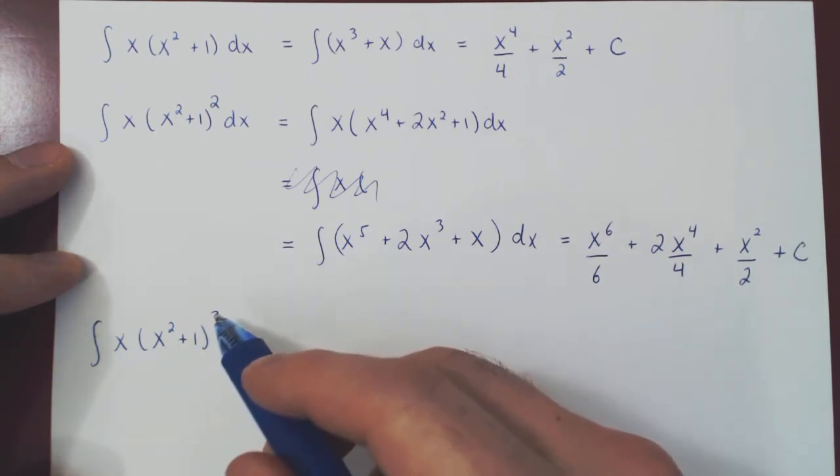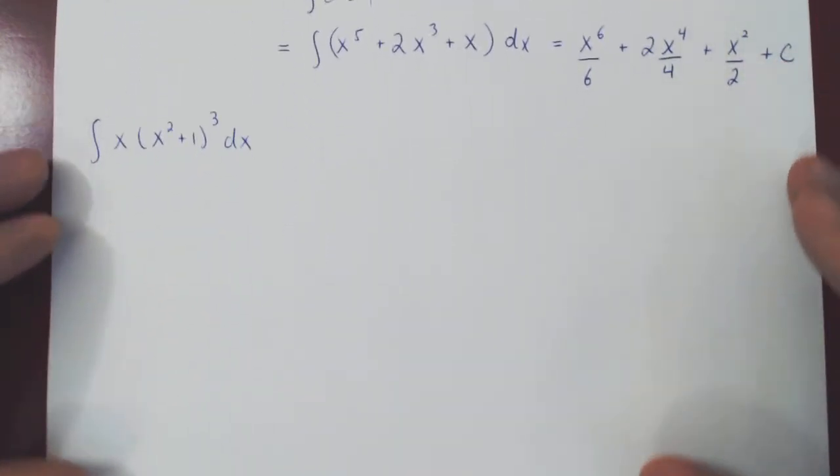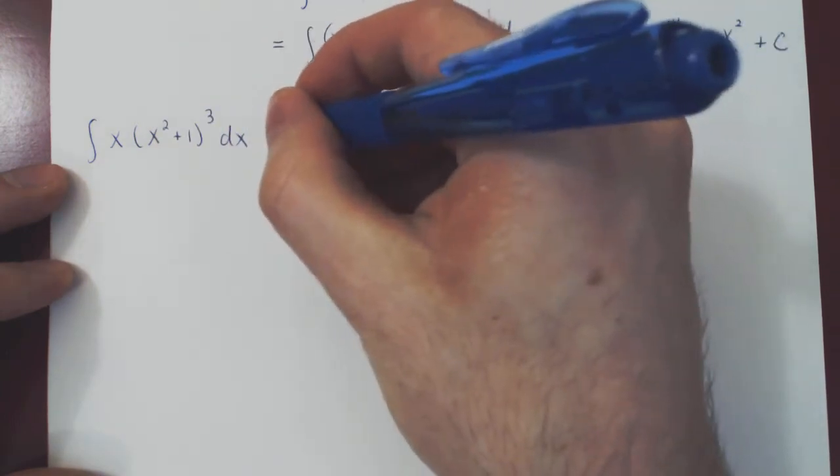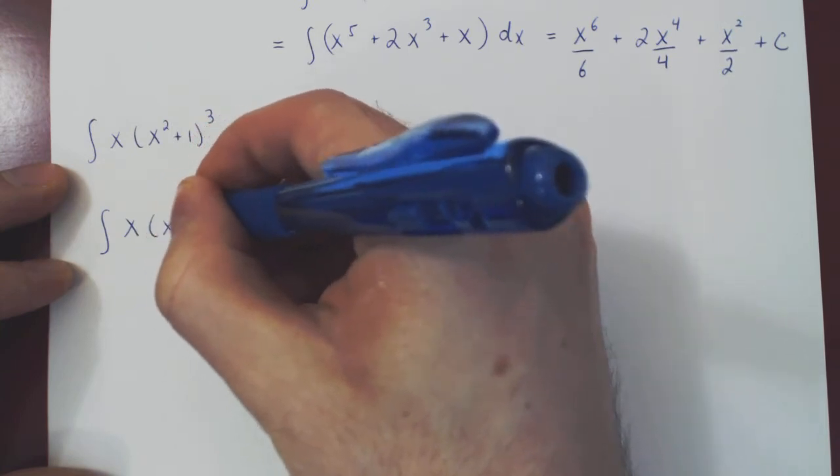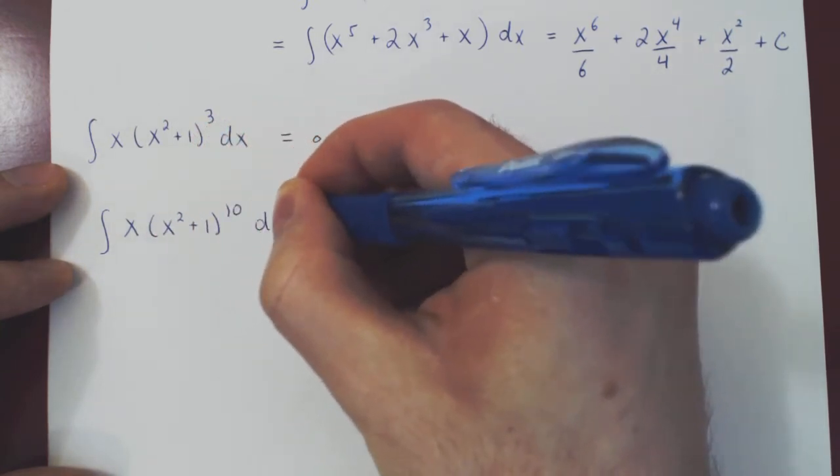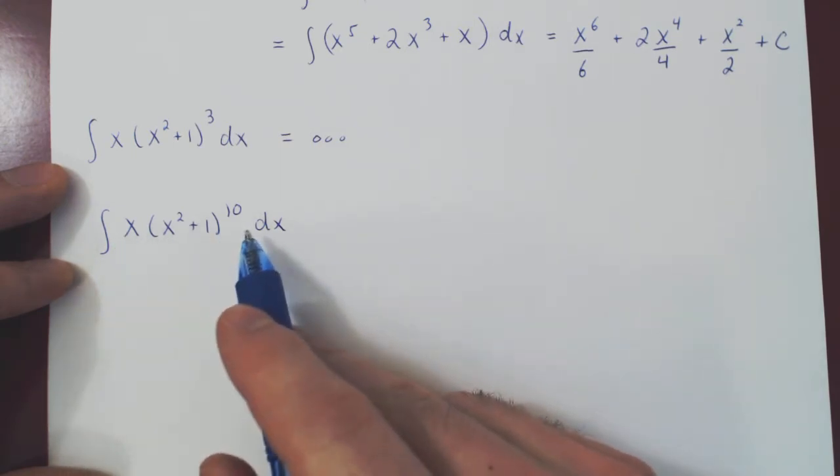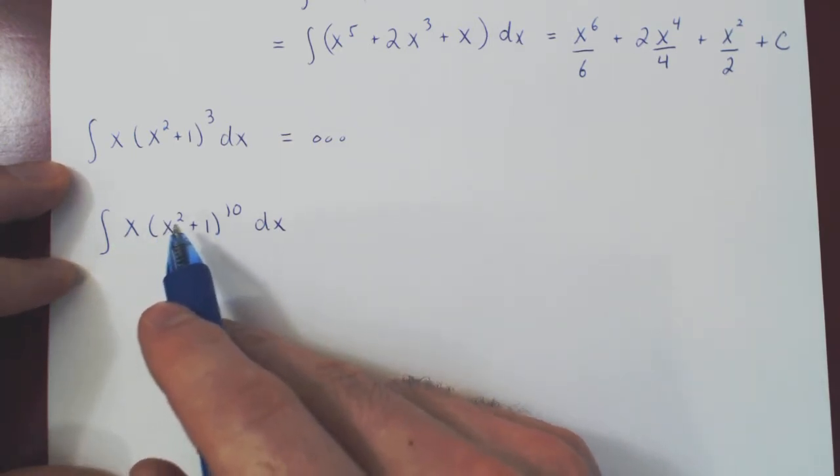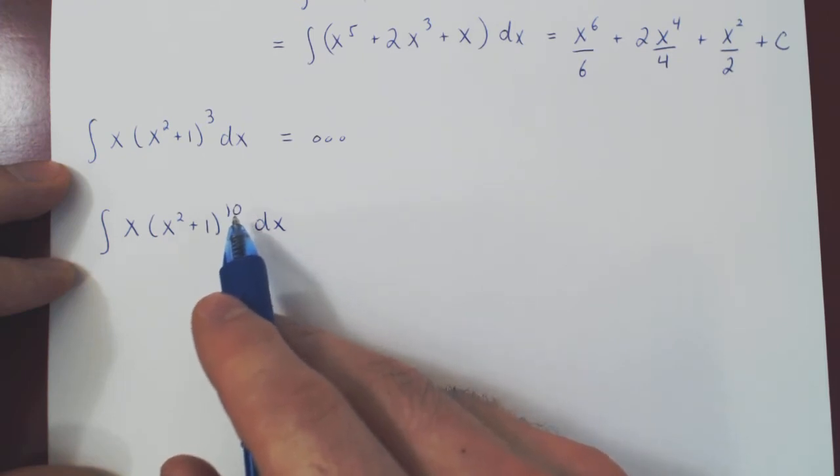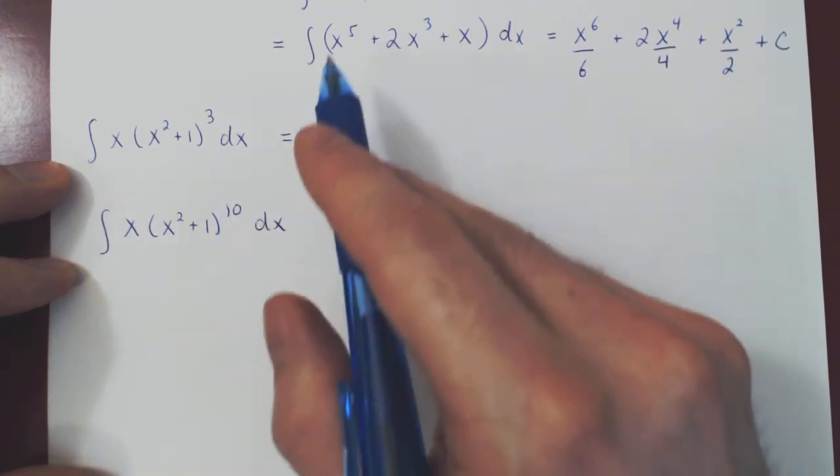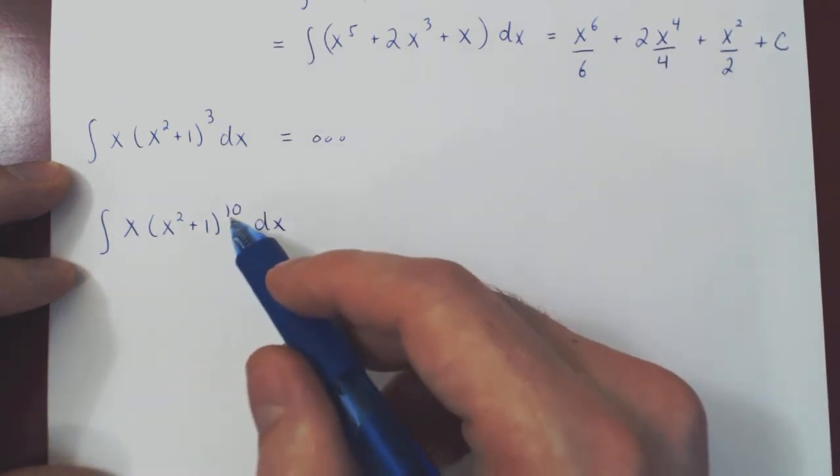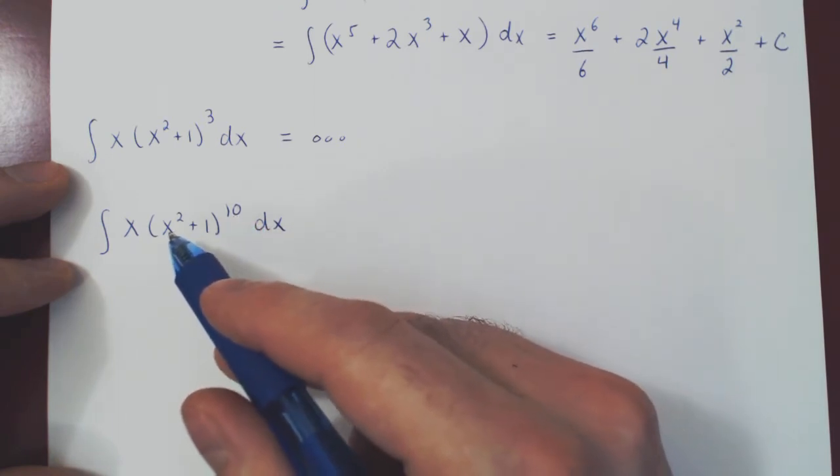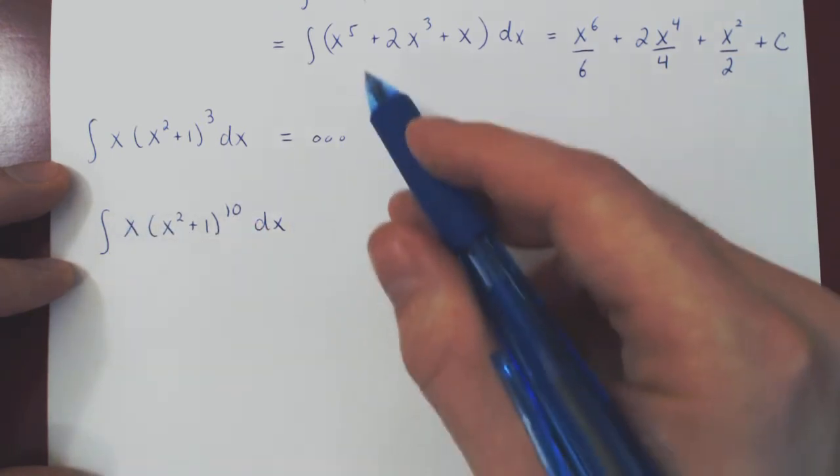And I might say, what if I took the 4th power, the 5th power, or why not do the 10th power? You're thinking, oh boy, this will be long. You'll have to do x squared plus 1 times itself 10 times. Once that's expanded, multiply by x, and then you can use the power rule, but you'll have this huge expression. The idea here, can we do better? Or do we have to absolutely multiply this out?